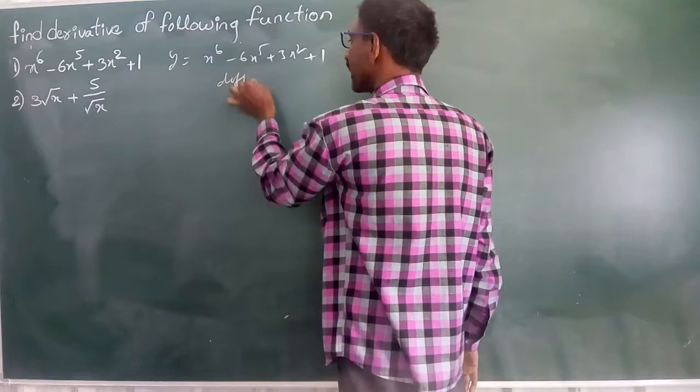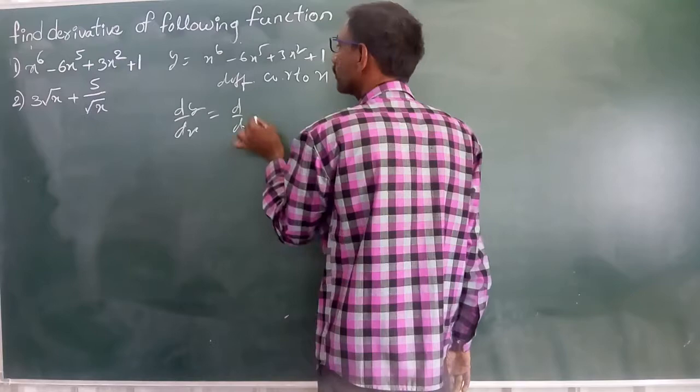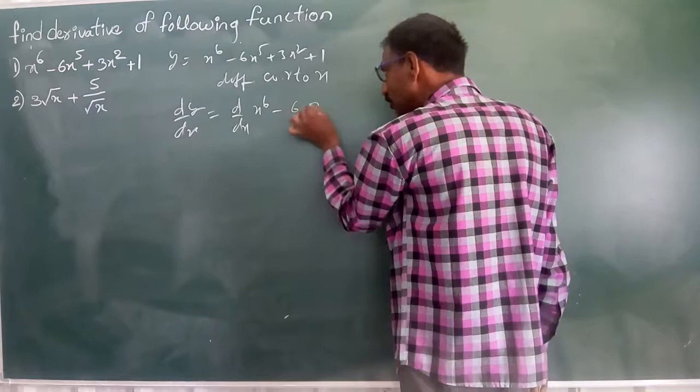So differentiate with respect to x. Then we get dy by dx here. That is equal to d by dx of x to the power of 6 minus 6 into d by dx of x to the power of 5.